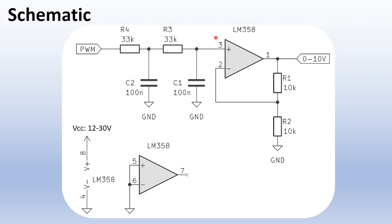To get a range of 0 to 10 volts, we add a 2 times amplifier built with this LM358 operational amplifier. The circuit is a standard non-inverting amplifier.